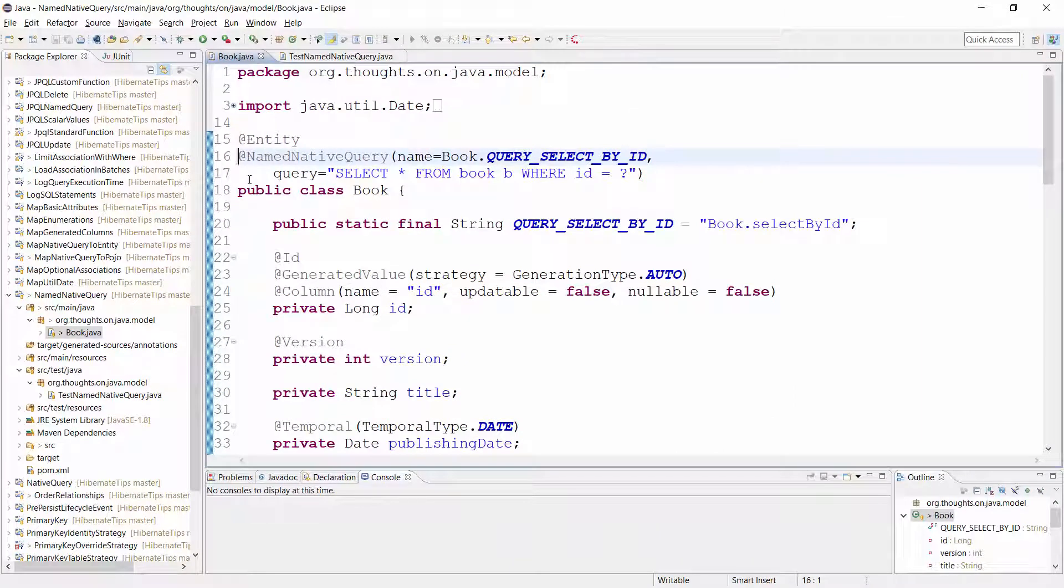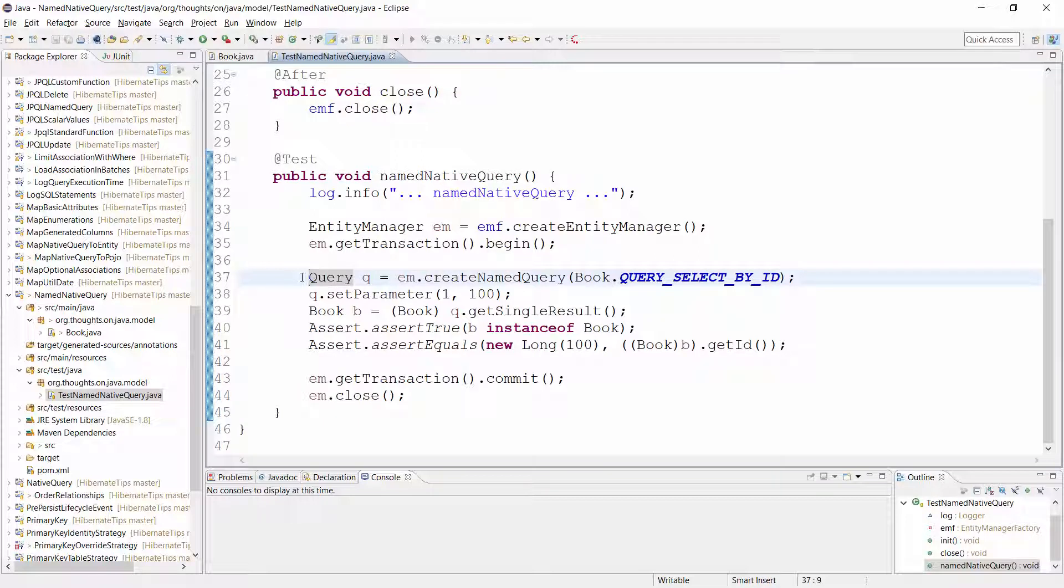Here you can see a NamedNativeQuery annotation. As you can see, it looks very similar to a NamedQuery annotation. The main difference is that you need to provide a native SQL instead of a JPQL statement as the query. As I said earlier, that allows you to use all query features that are supported by your database. A NamedNativeQuery can be used in the same way as a NamedQuery. You just need to call the CreateNamedQuery method of the EntityManager with the name of your NamedNativeQuery. You then get a query instance that you can use to set BindParameter values, to define pagination, and to execute the query. That's all about native queries for now. If you like to learn more about it, please take a look at my NamedQuery video. I will add a link to it to the video description.